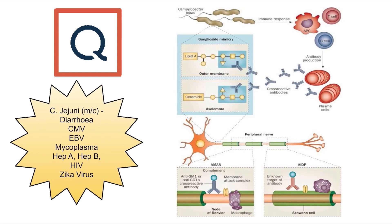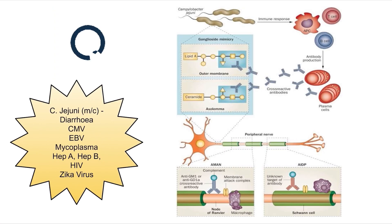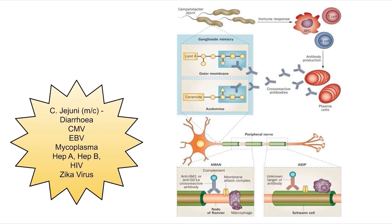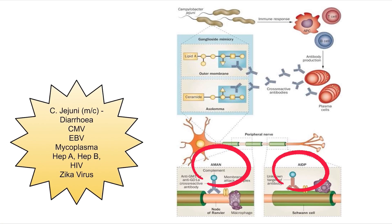Campylobacter jejuni being most commonly associated is a potential MCQ point. As seen in the picture, Campylobacter jejuni triggers the immune response where cross-reactive antibodies are formed — they can attack the myelin sheath, leading to AIDP, or they can attack the axonal membrane, which can lead to AMAN or AMSAN subtypes.